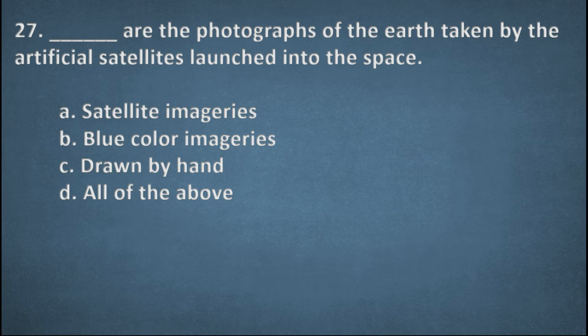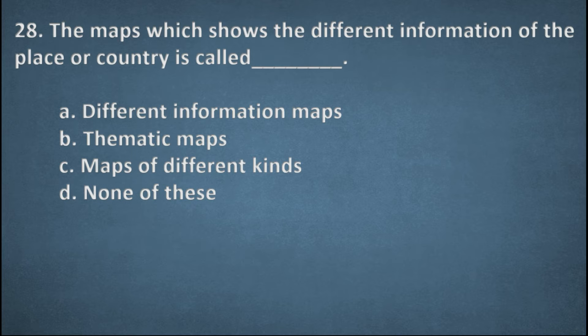Next question. Dash are the photographs of the earth taken by the artificial satellites launched into the space. Options: Satellite imageries, Blue color imageries, Drawn by hand, All of the above. The right option, A, Satellite imageries. Next one. The maps which shows the different information of the place or country is called. Options: Different information maps, Thematic maps, Maps of different kinds, None of these. The right option, B, Thematic maps.